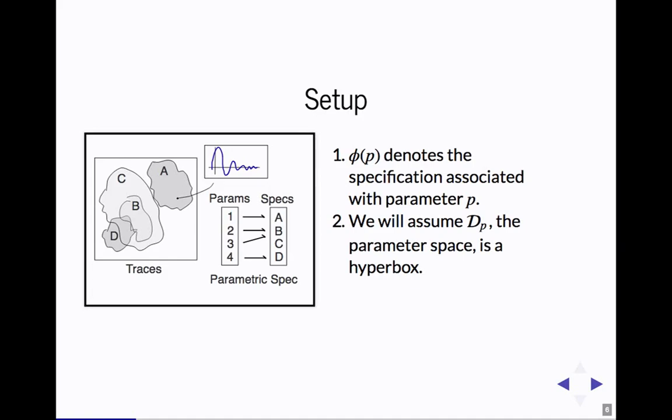A specification in this context, what I mean is just a set of traces. Here we have a signal on the top, and a set A. We can have multiple specifications, and a parametric specification is just a mapping from some parameter space to a set of specifications. In this work, we're going to assume that the parameter space is some hyperbox endowed with just some metric topology, and that's really all we need.